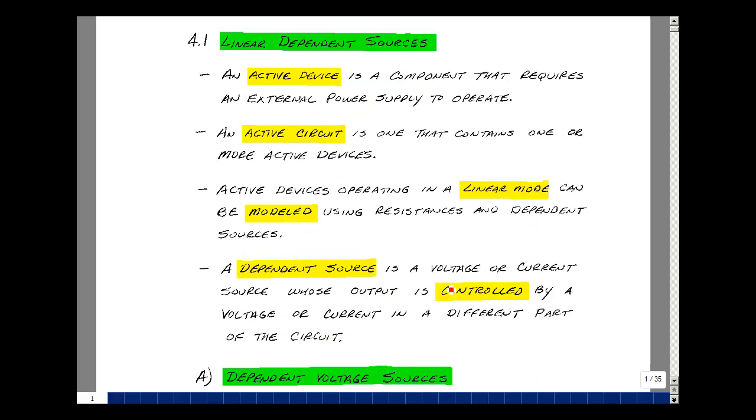A dependent source is a voltage or current source whose output is controlled by a voltage or current somewhere else in the circuit. So our previous voltage sources and current sources, we call them independents, in that their value was predetermined or fixed. Now we're going to have a voltage source or a current source whose value changes depending on another voltage or current in the circuit.